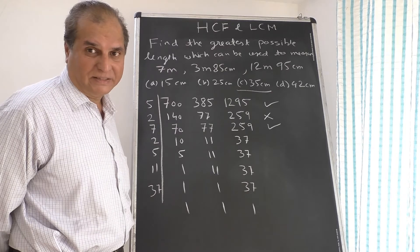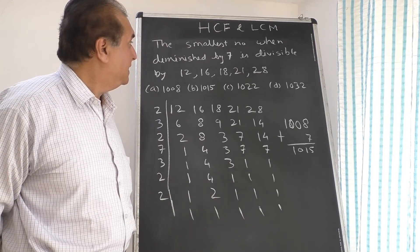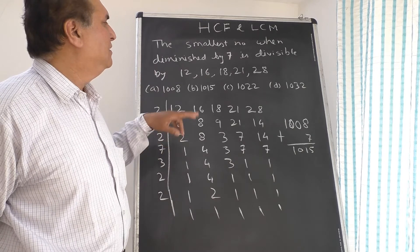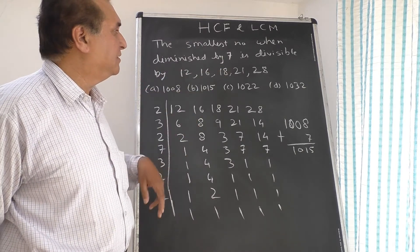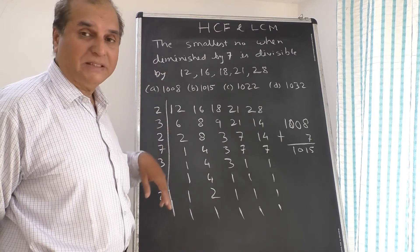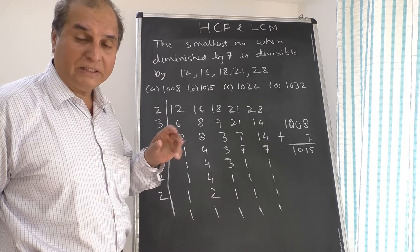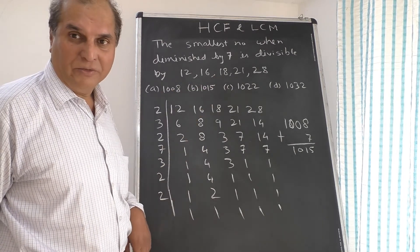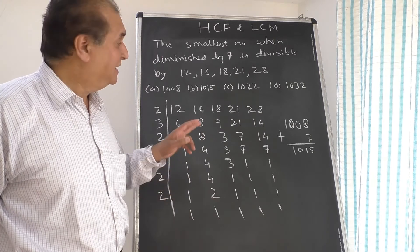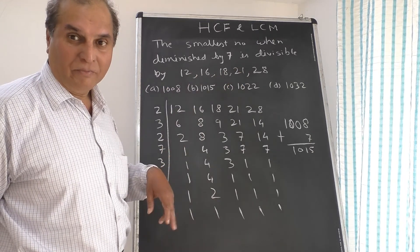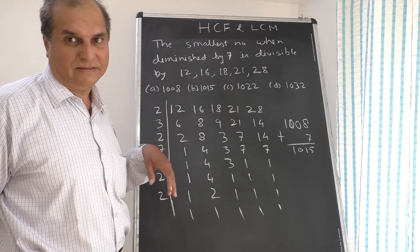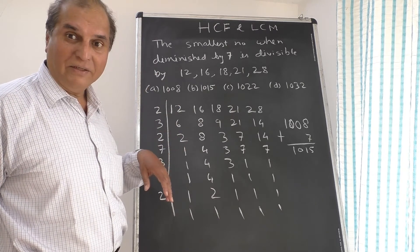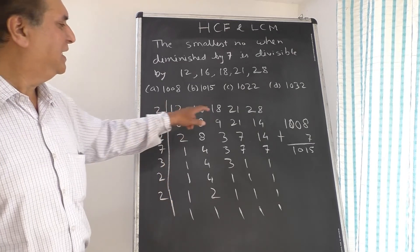The next sum: the smallest number when diminished by 7 is divisible by 12, 16, 18, 21, 28. The number when diminished by 7, means a number when 7 is to be subtracted from that number, and that number is divisible by all five. It means that number is LCM of all five numbers, and after getting the LCM you have to add 7 in that. Understanding? The language might be tricky. So 12, 16, 18, 21, 28.